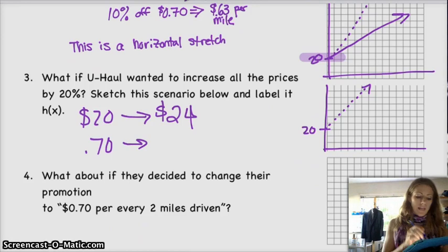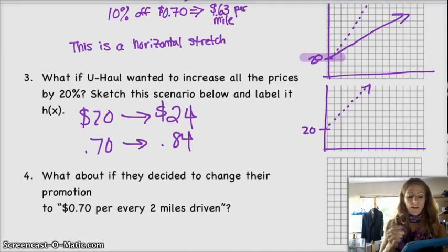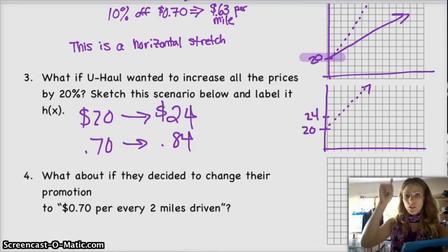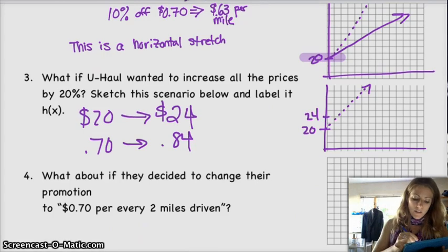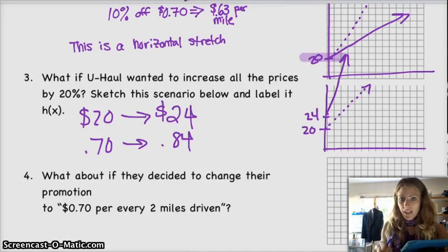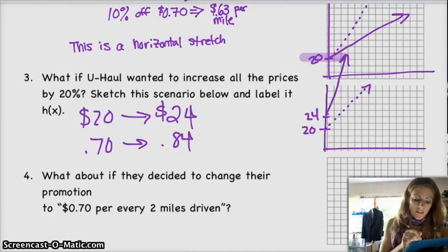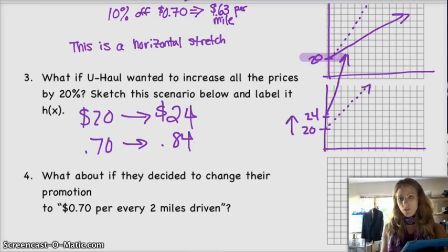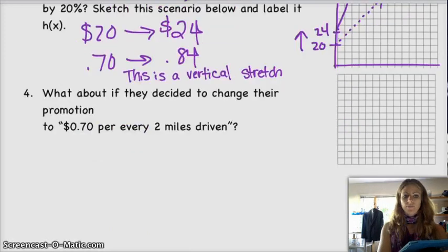So that's going to be $0.84. So this actually increases the y-intercept to $24, and it also increases the slope. So you end up with something like this, a steeper slope and an increased y-intercept. And with that, you can see that since my y-intercept also increased, that it must have been a vertical stretch in this case.